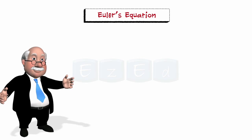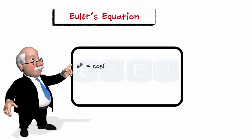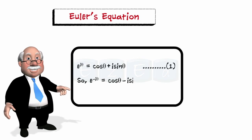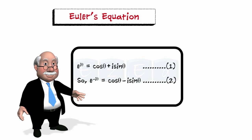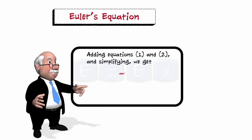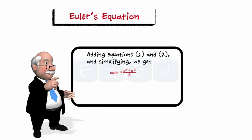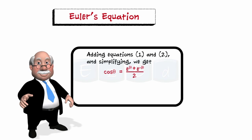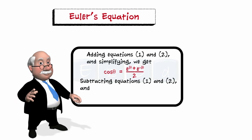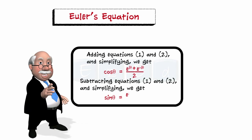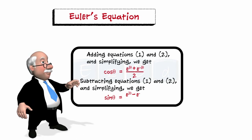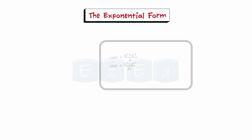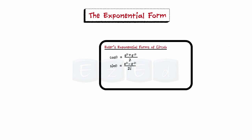From Euler's equation, we have e^(iθ) = cos θ + i sin θ, and so e^(−iθ) = cos θ − i sin θ. Adding these two equations and simplifying, we get cos θ = (e^(iθ) + e^(−iθ)) / 2. Similarly, subtracting and simplifying, we get sin θ = (e^(iθ) − e^(−iθ)) / 2i. These are called Euler's exponential forms of circular functions.